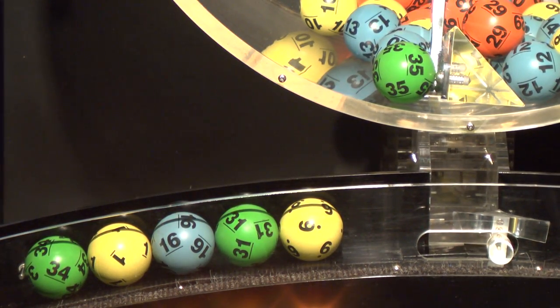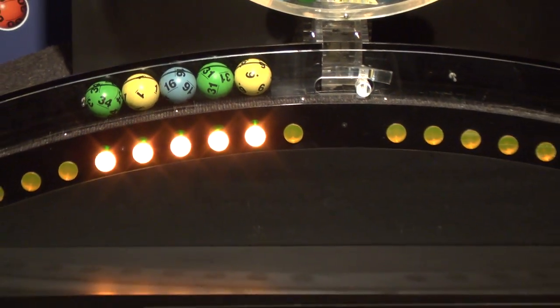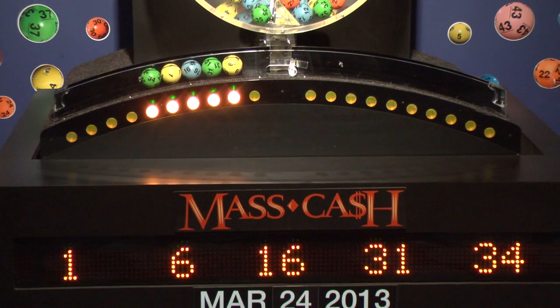Once again, the winning Mass Cash numbers for Sunday, March 24th are 1, 6, 16, 31, and 34.